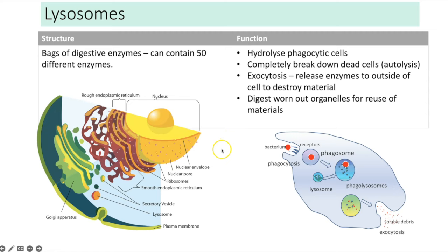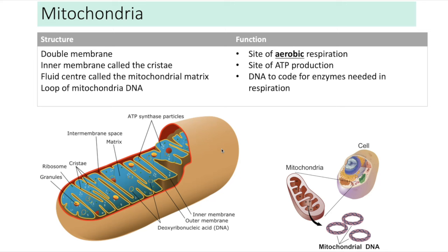Mitochondria are double membrane-bound organelles. The inner membrane is highly folded and called the cristae. Inside is a fluid centre called the mitochondrial matrix, containing 70S ribosomes and loops of DNA so the organelle can create its own enzymes. The function is the site of aerobic respiration, producing large amounts of ATP. The DNA codes for the enzymes required for respiration.